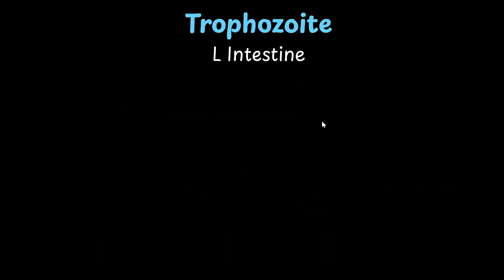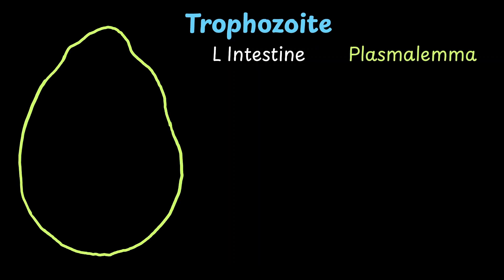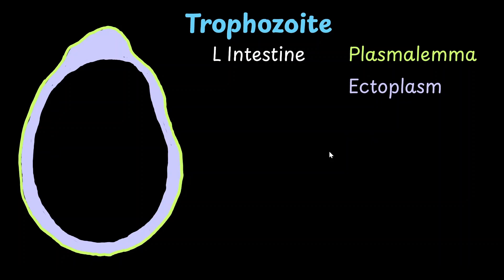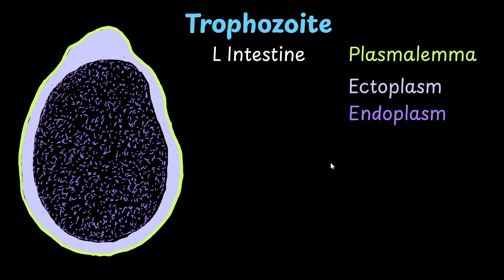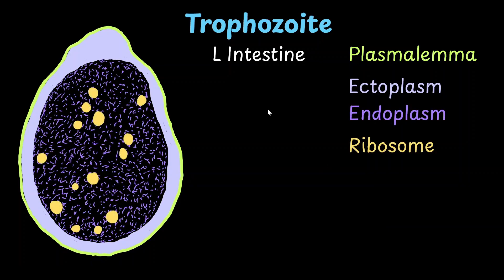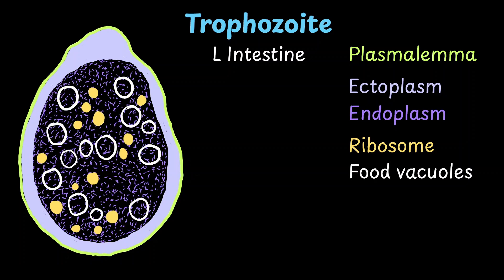The first is the trophozoite, which lives in the mucosa and submucosa of the large intestine. The cell is surrounded by a plasma lemma. The cytoplasm is clearly differentiated into two zones: the clear, viscous, non-granular outer ectoplasm, and the granular, fluid-like inner endoplasm. It has a number of ribosomes as well as food vacuoles, and it feeds on the tissues of the large intestine using the enzyme histolysin, so we can find RBCs as well as bacteria within its food vacuoles.